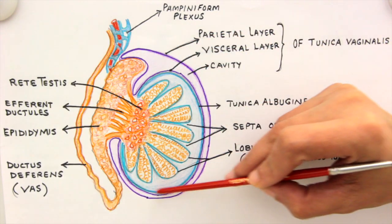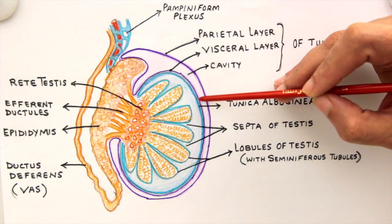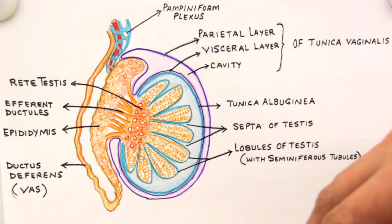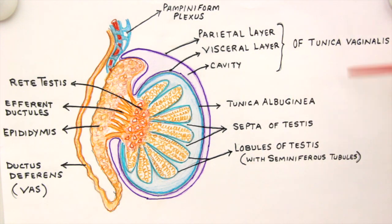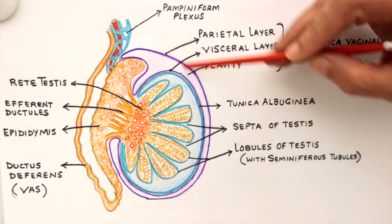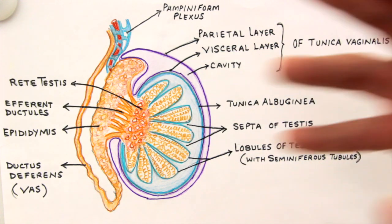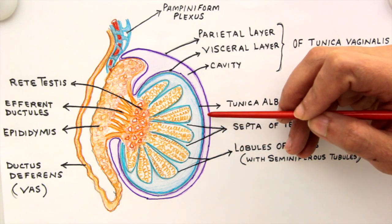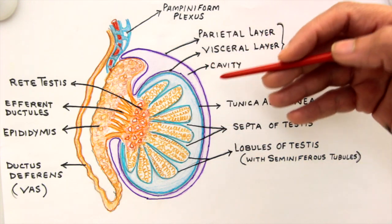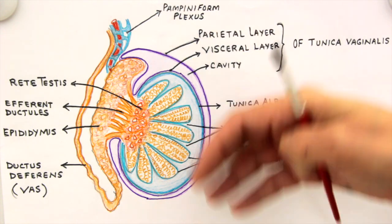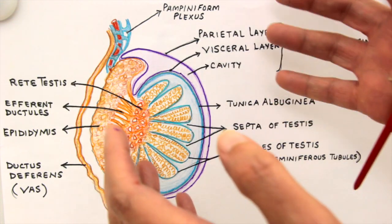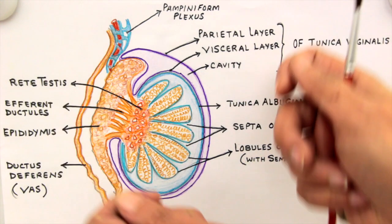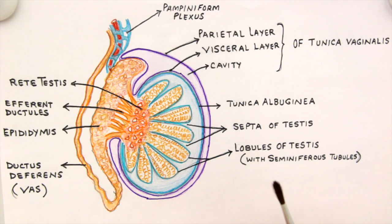Another structure visible on this illustration is a purple-colored, double-layered thing — the tunica vaginalis. Tunics are coats or coverings surrounding an organ. We have the tunica albuginea as the white capsule investing the testis tissue, and then another covering called the tunica vaginalis. This is an extension of the abdominal peritoneum — when the testes descended from the lumbar region through the inguinal canal into the scrotum, they pulled the peritoneum down with them.